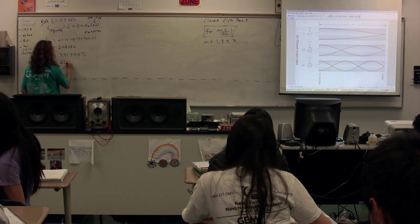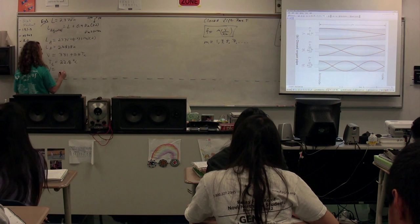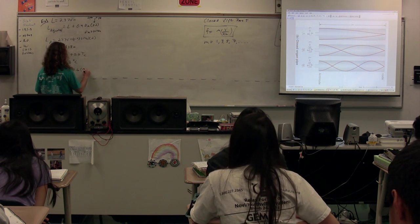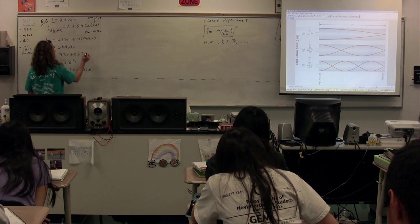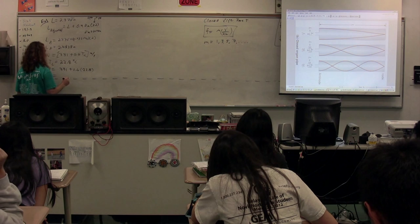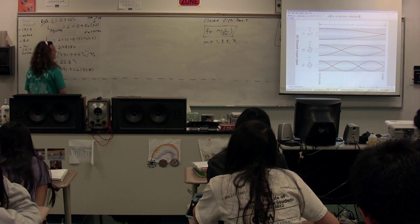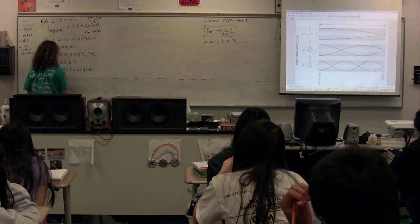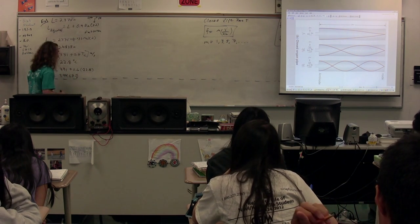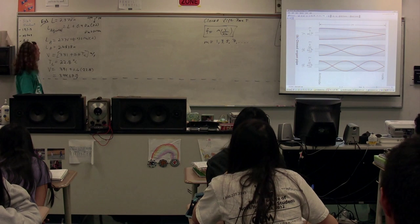So the speed of sound in air is 331 plus 0.6 times 22.8, which is 344.68 meters per second, because that's the velocity.